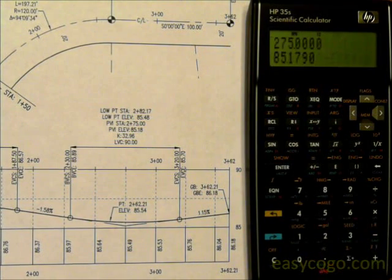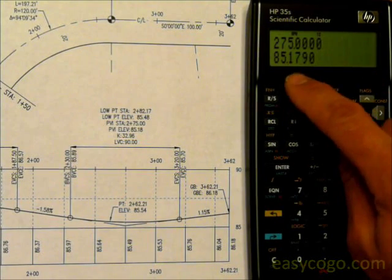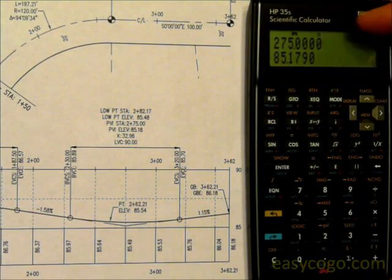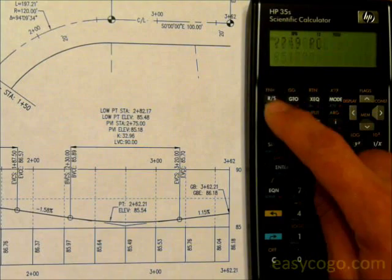Press RS, the PVT station elevation. When there's a dash in that description, it means that the top line is the station, the bottom line is the elevation, and that matches our sample. Press RS.